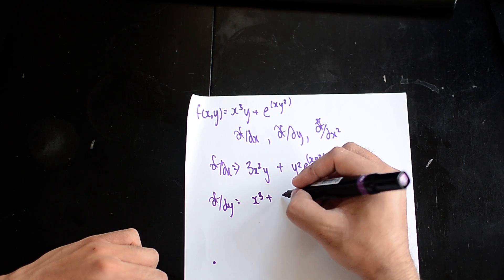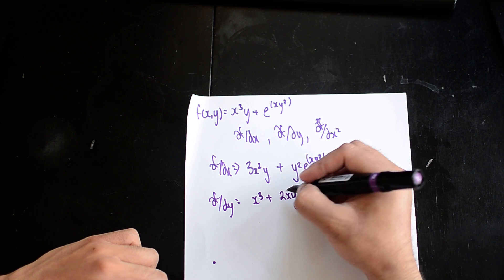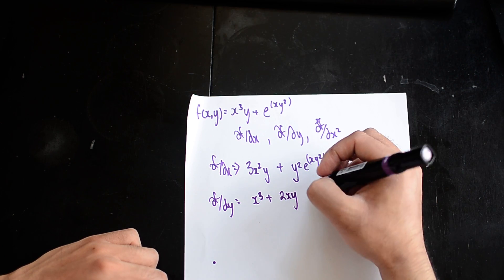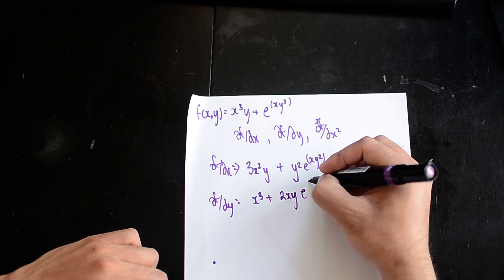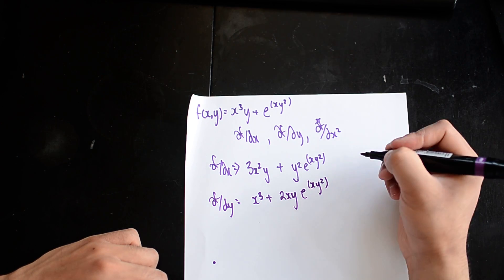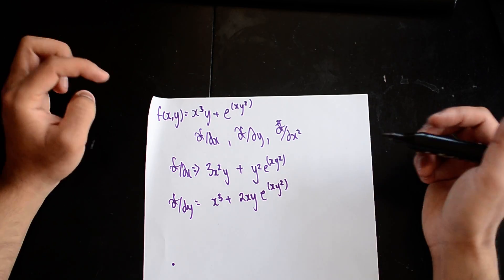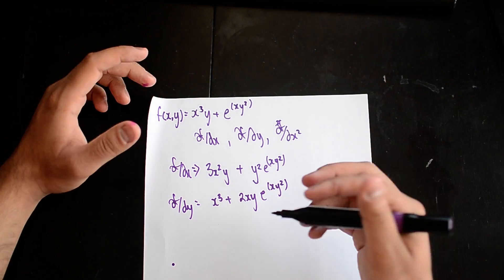Well 2yx, so it'll be 2y multiplied by x, but either one is fine, multiplied by e^(xy²). So as you can see, this is now my df/dy.